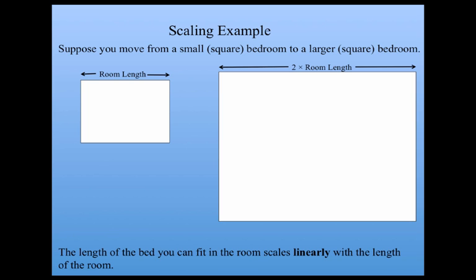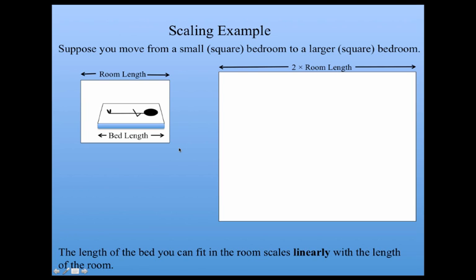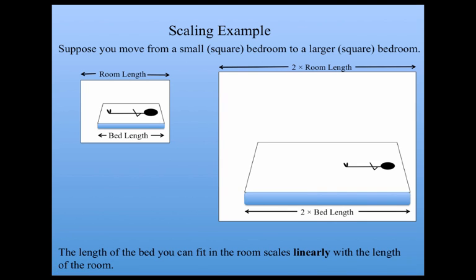Well, the length of a bed you can fit scales linearly with the length of the room. That is, you have a particular length of bed in your old room, now you can fit twice that length of bed in your new room. So we can say that here, bed length is proportional to room length. And you can plot it like this. Where as room length gets bigger, the size of the bed you can fit scales in this linear way.